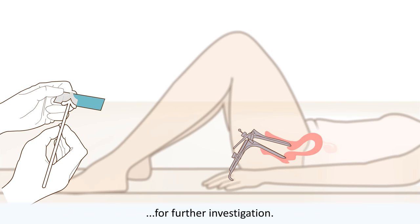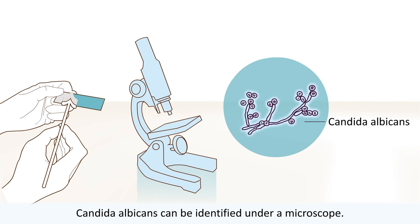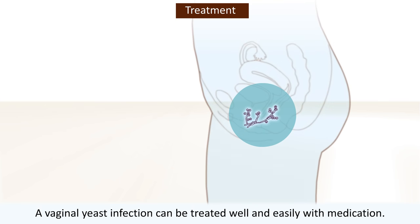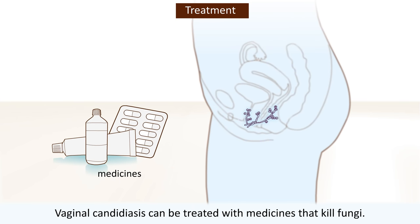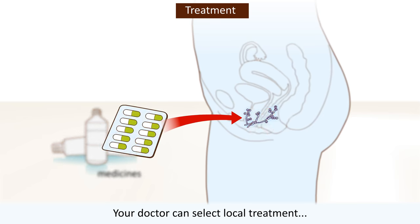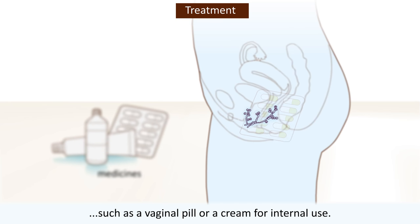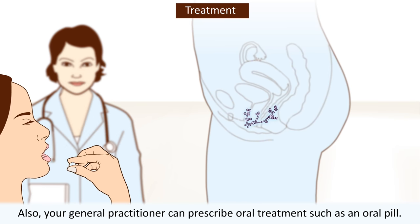Candida albicans can be identified under a microscope. A vaginal yeast infection can be treated well and easily with medication. Vaginal candidiasis can be treated with medicines that kill fungi. Your doctor can select local treatment such as a vaginal pill or a cream for internal use, or your practitioner can prescribe oral treatments such as an oral pill.